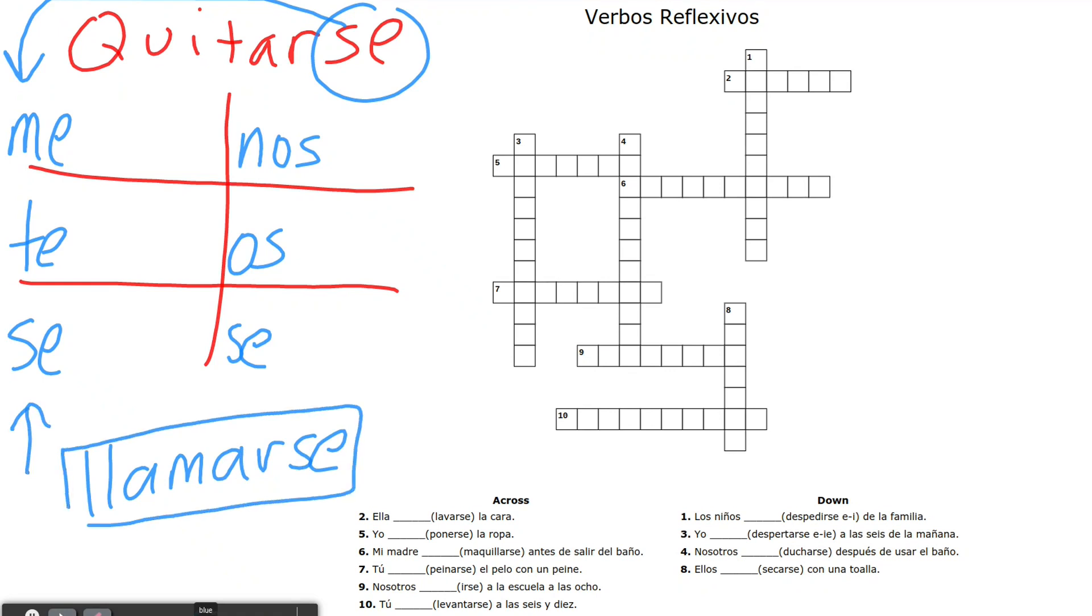So the verb llamarse is the reflexive verb to call oneself something. But anyway, back to the original thing. After you're done with the se, you've taken that off, you've put it in front, and you've changed it. And then what you're going to do is just conjugate what's left over.